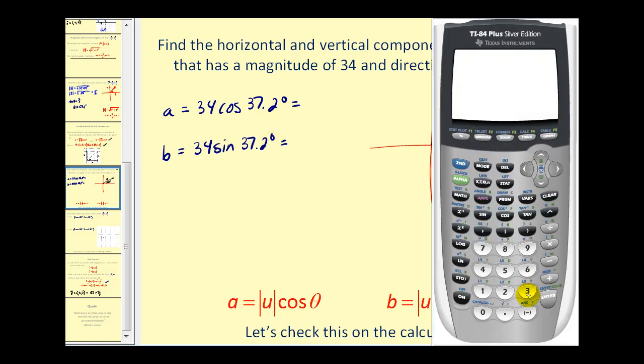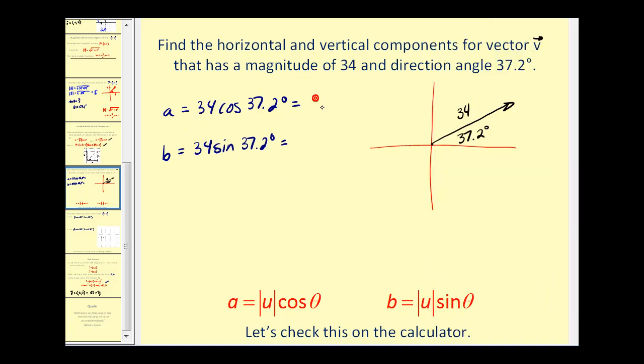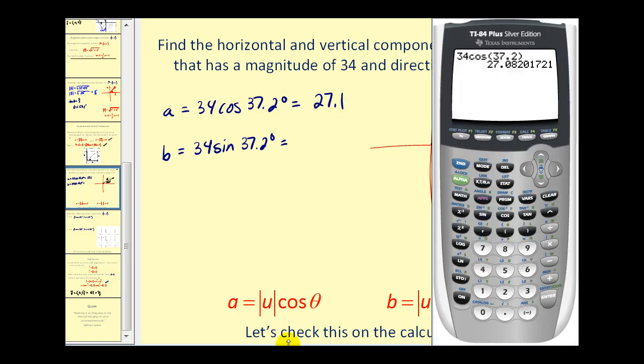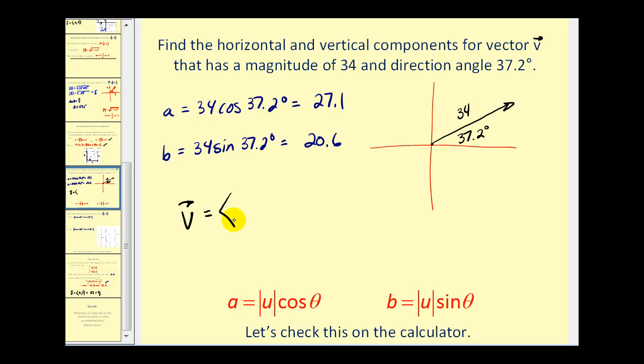We're already in degree mode. So the horizontal component is approximately 27.1. And the vertical component would be approximately 20.6. We can write this in component form as follows.